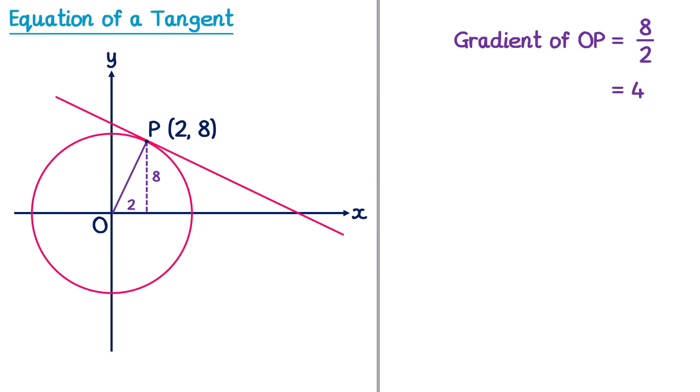We're then going to use this to find the gradient of the tangent. This relies on a bit of knowledge from circle theorems. We need to know that when a radius meets a tangent it forms a 90 degree angle. This means that the line OP and the tangent are perpendicular to each other, which means their gradients must be negative reciprocals. So if we know the gradient of OP is 4, the gradient of the tangent must be negative one quarter.